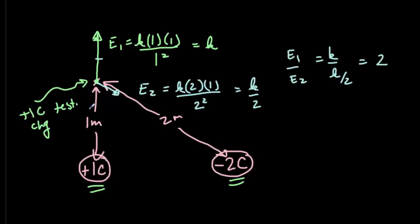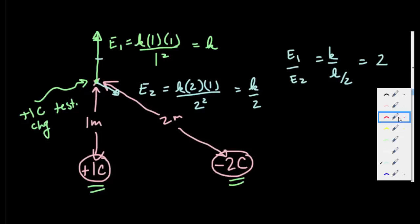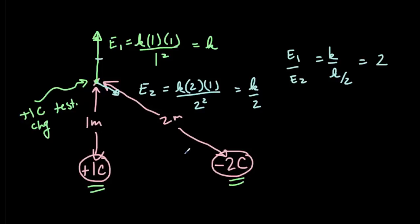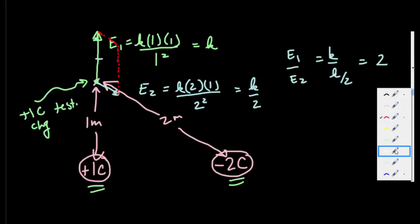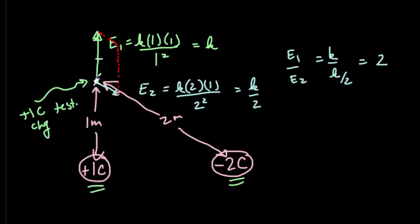The IB might ask what direction the resultant field points. We have a rough scale diagram for E1 and E2. We complete a parallelogram to add those vectors and find the resultant — the resultant is the diagonal of that parallelogram. The IB would like you to be able to qualitatively predict the direction of an electric field due to several charge contributions.